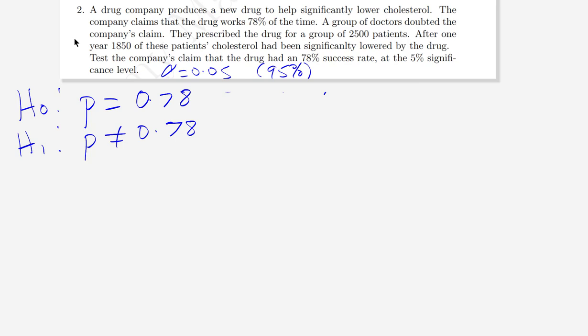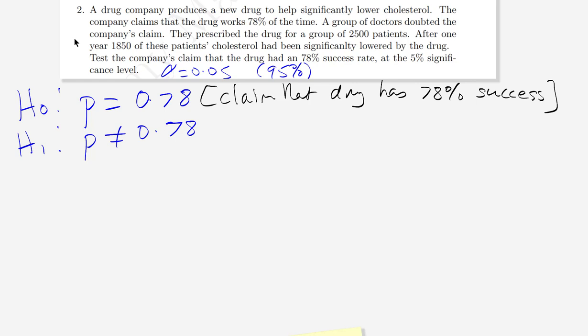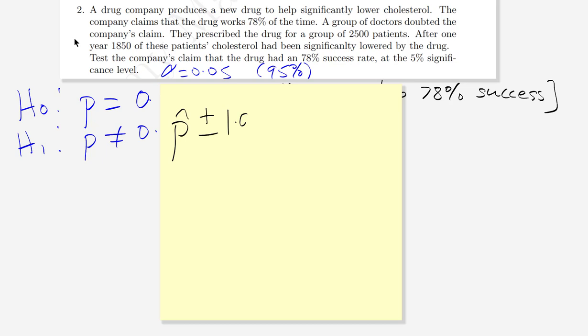The claim is that it works 78% of the time, so in this case the null is the claim — the claim that the drug has a 78% success rate. Then we calculate the confidence interval. The formula for confidence intervals for proportions is p-hat plus or minus 1.96 times the standard error, which is the square root of p-hat times (1 minus p-hat) all over n.